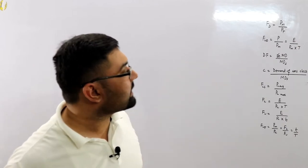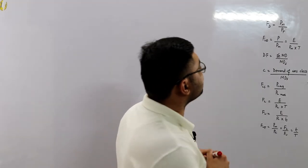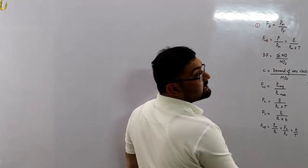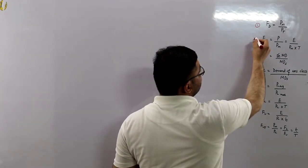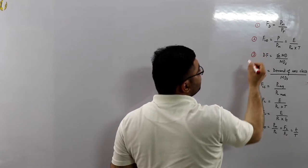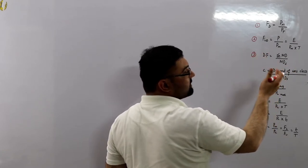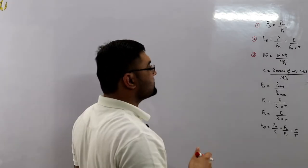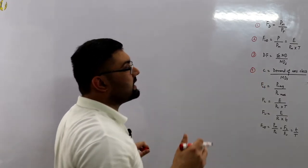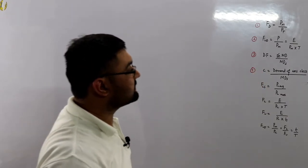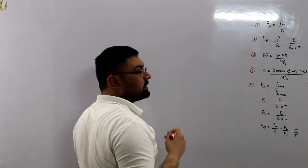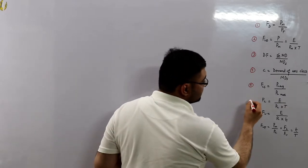Number one is the demand factor — maximum demand on the connected load. Number two is the load factor — average load to the maximum demand. Number three is the diversity factor — summation of the maximum demands of individual consumers to the maximum demand of the system. Number four is the class contribution factor — demand of a consumer class at the system peak divided by the system peak. Number five is the loss factor — power loss at the average load divided by the power loss at the maximum load.